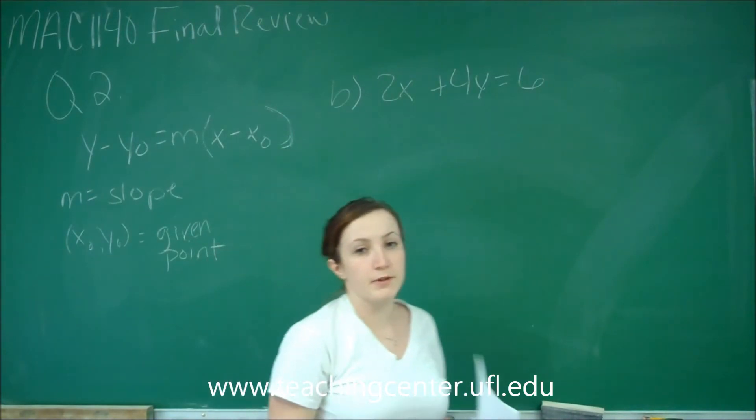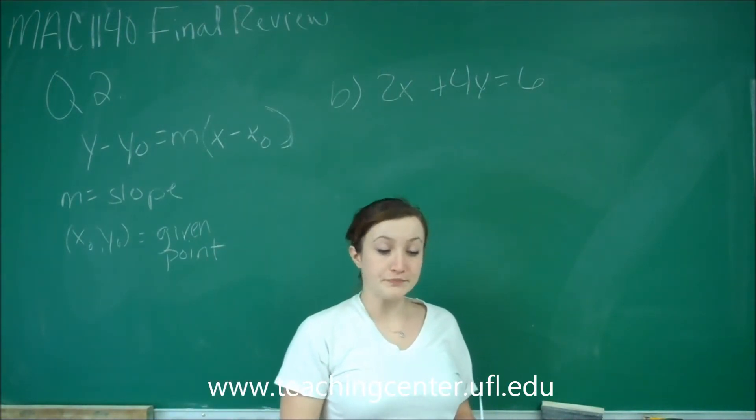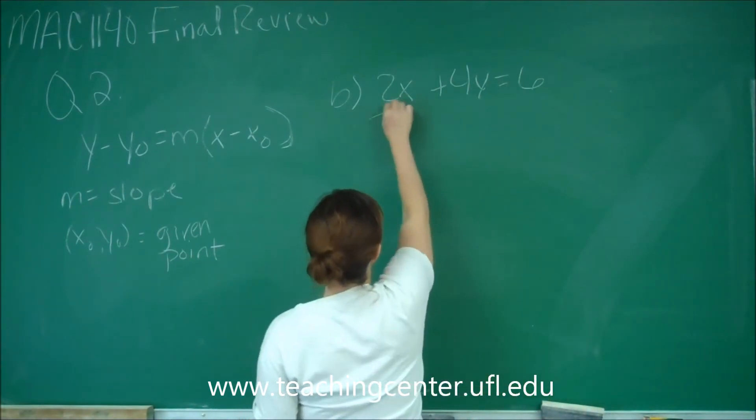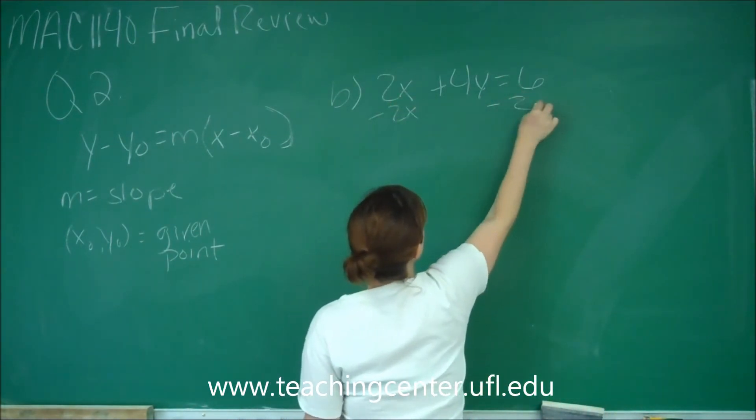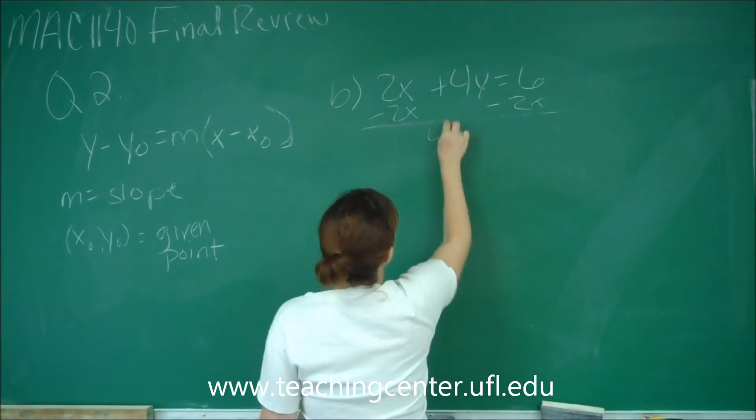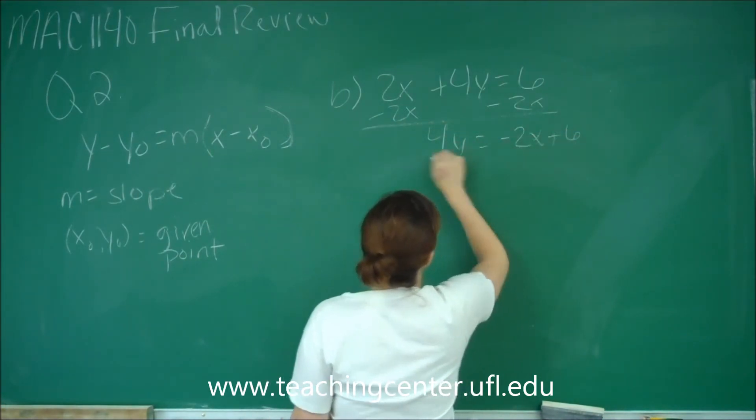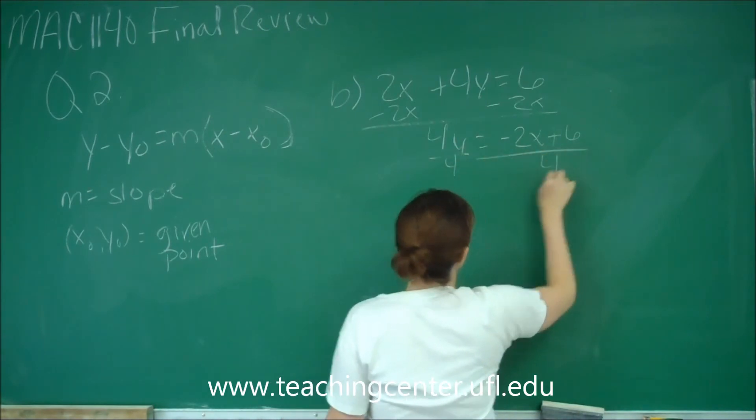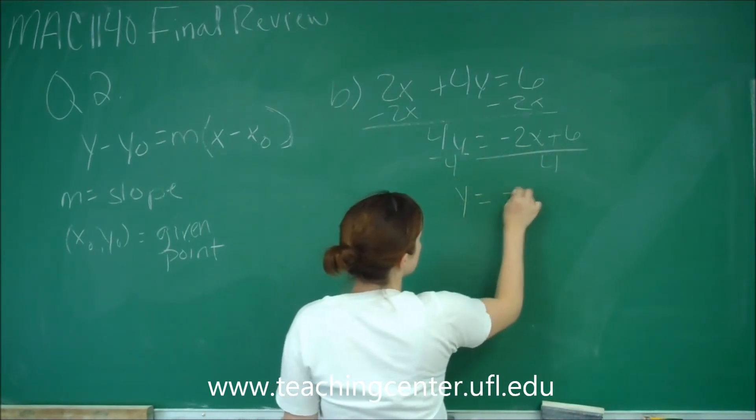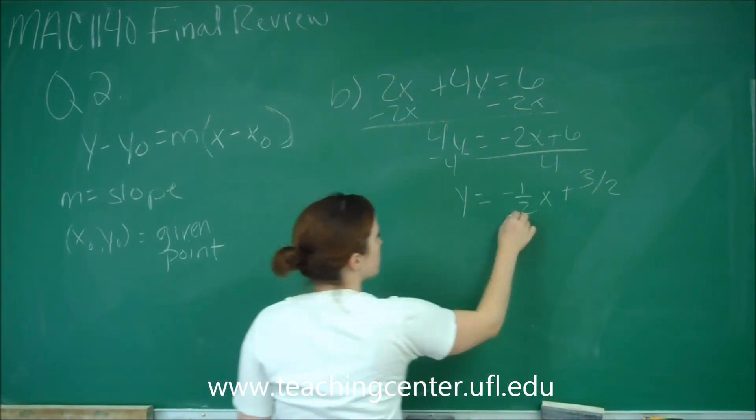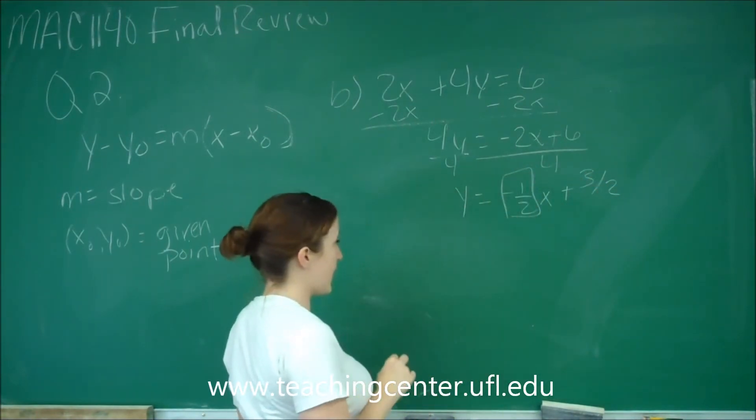Any time we're dealing with slope, you probably want to put it into slope-intercept form because the slope is easily identifiable. So we subtract 2x from both sides, we get 4y equals negative 2x plus 6. We divide everything by 4, and we get y equals negative one-half x plus three-halves. So our slope is negative one-half.